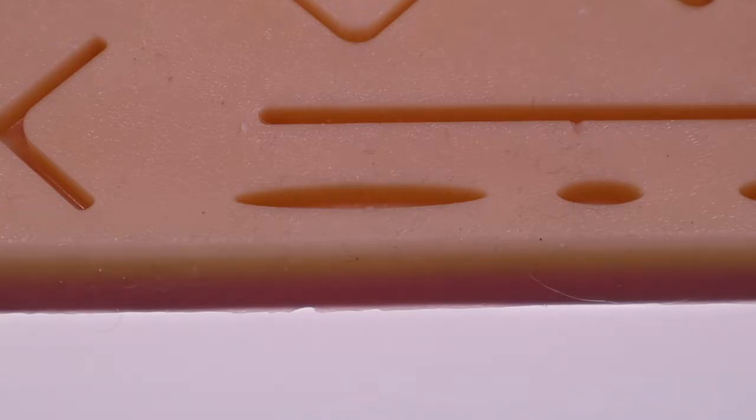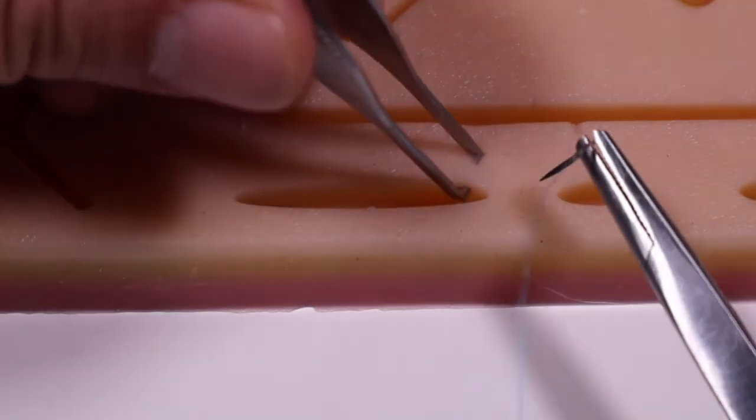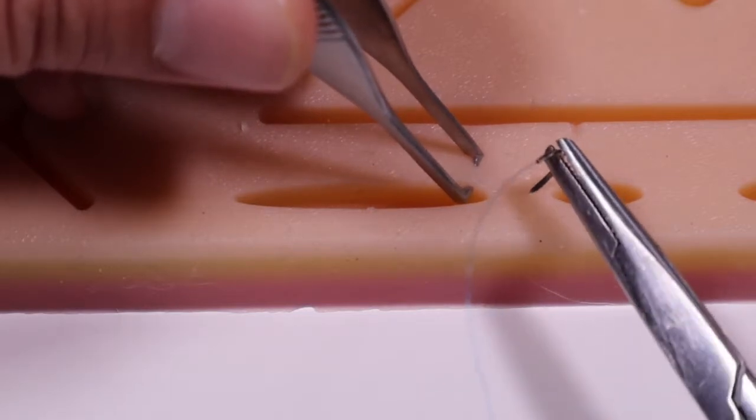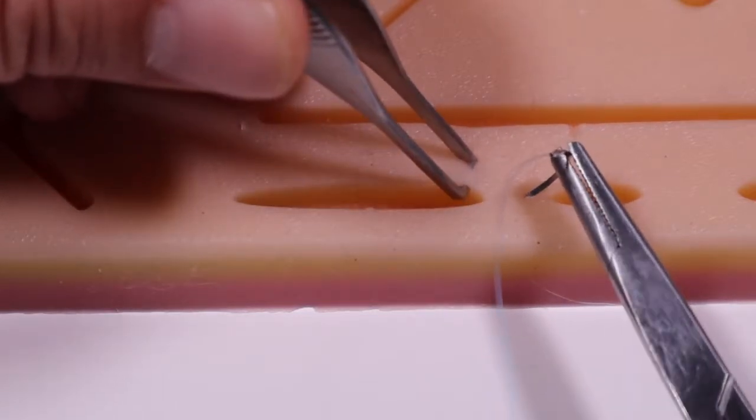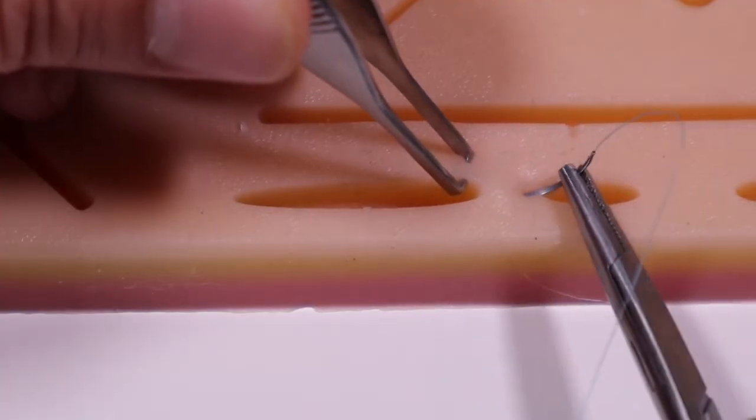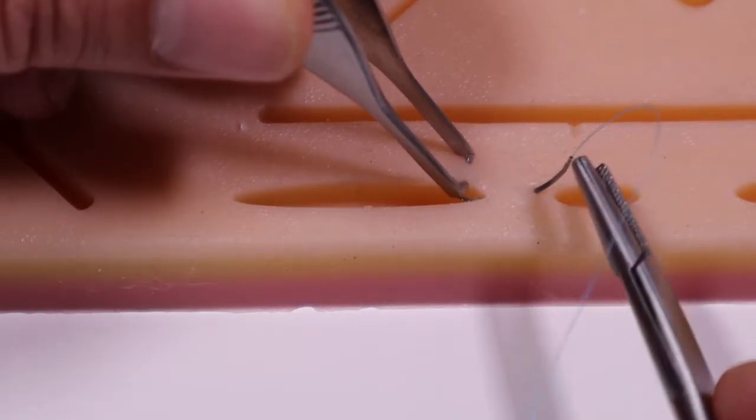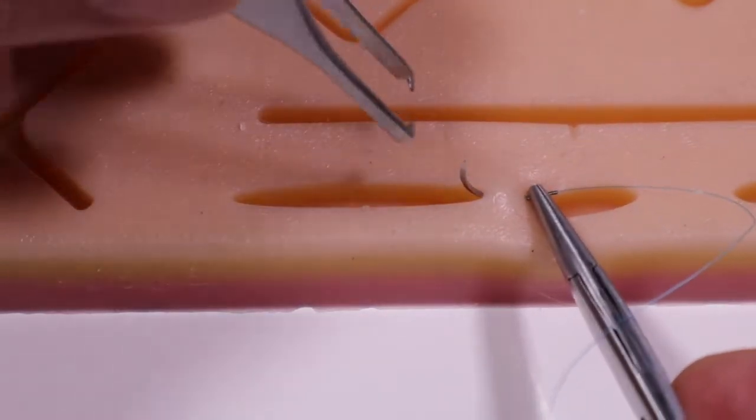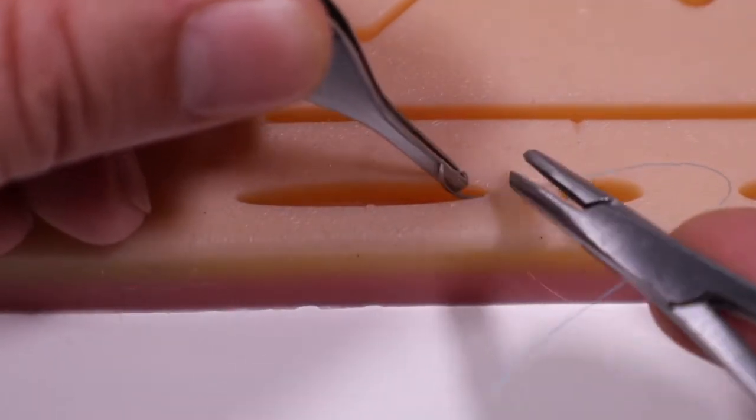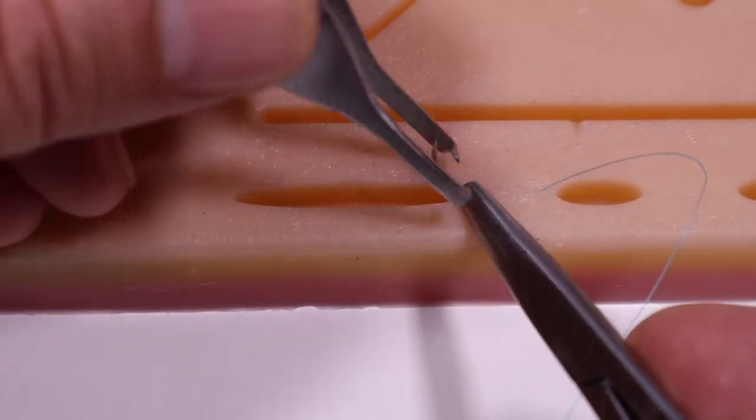I'm using an absorbable monofilament suture. I'm going to enter on the right hand side of the wound approximately a centimeter from the edge. I'm going to rotate through and come out this subcutaneous layer right at the point of that wound. I'm going to rotate that through enough to go ahead and reload our needle.